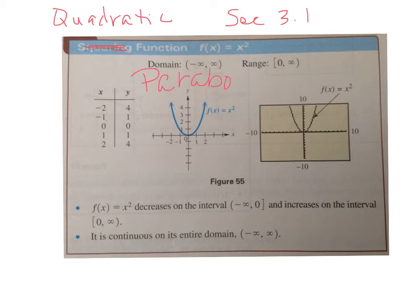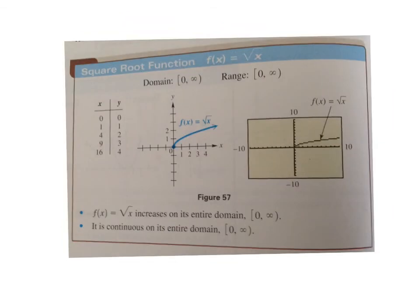Notice your domain is from negative infinity to positive infinity, but your range just goes from zero to infinity because that's your minimum value and then it goes up from there. Honestly, if you square a number, it's positive, right? So it can't go down below.